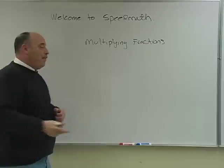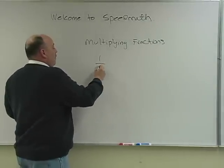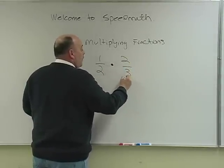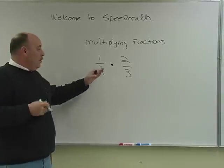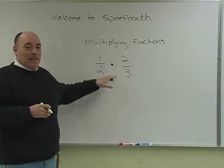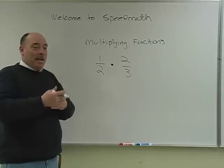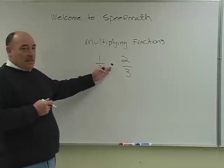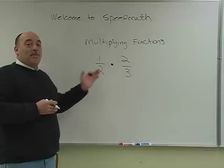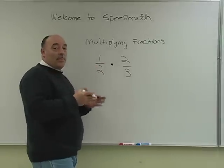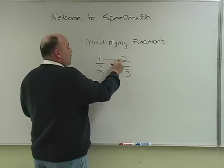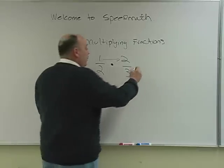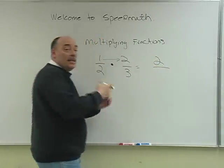For our first example we'll keep it nice and simple: one half times two thirds. Now you may ask yourself what this particular dot here means. In algebra and in advanced stages of mathematics we've replaced the typical x or multiplication sign with this dot. When multiplying these two fractions, we go from one numerator to the next numerator and multiply those two numbers. One times two is two, so you put a two in the numerator's place value.